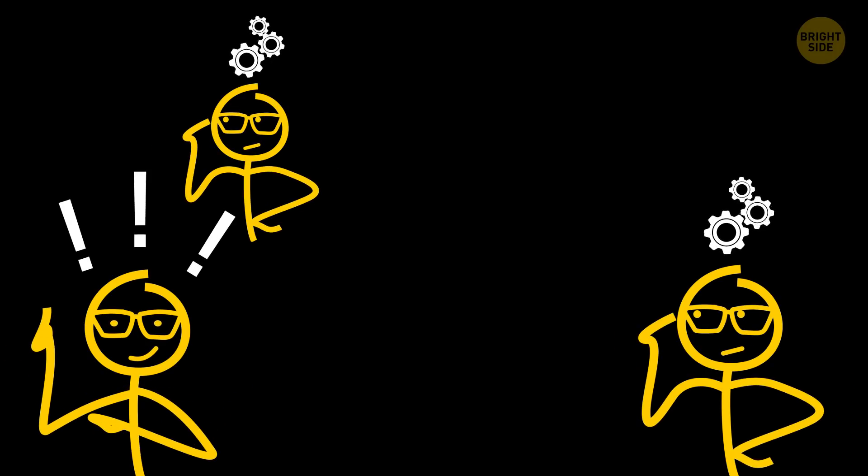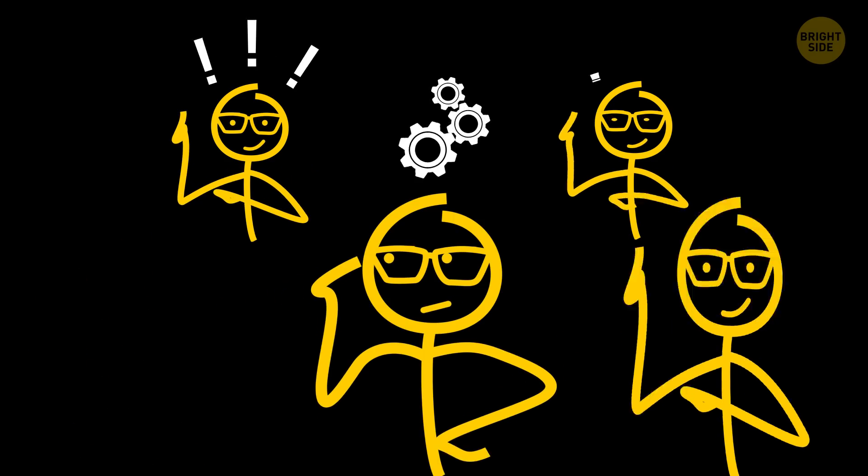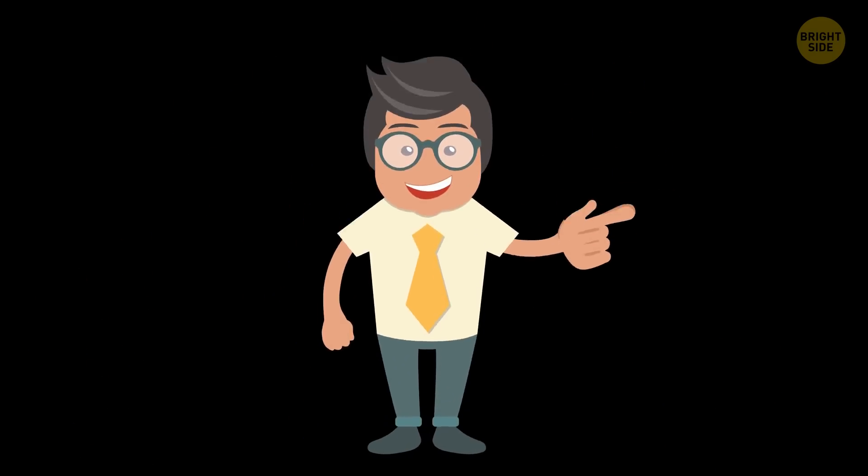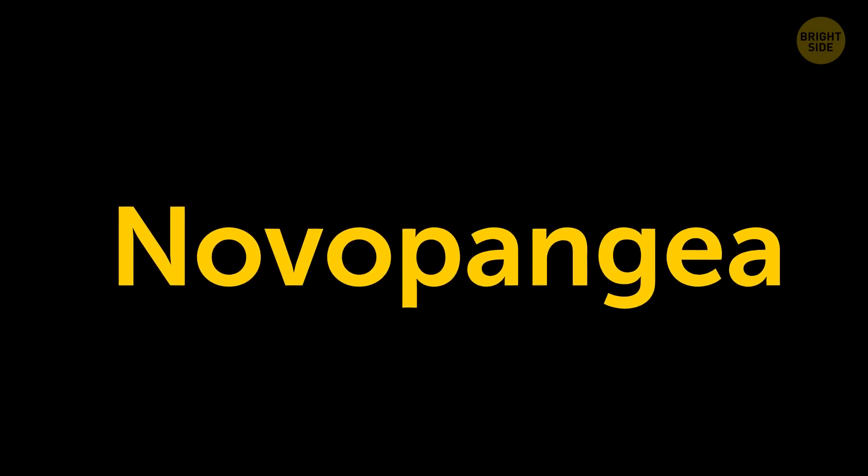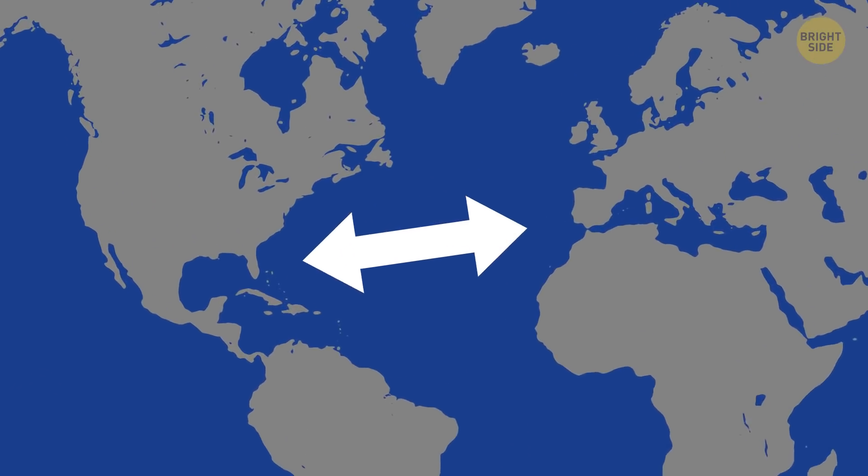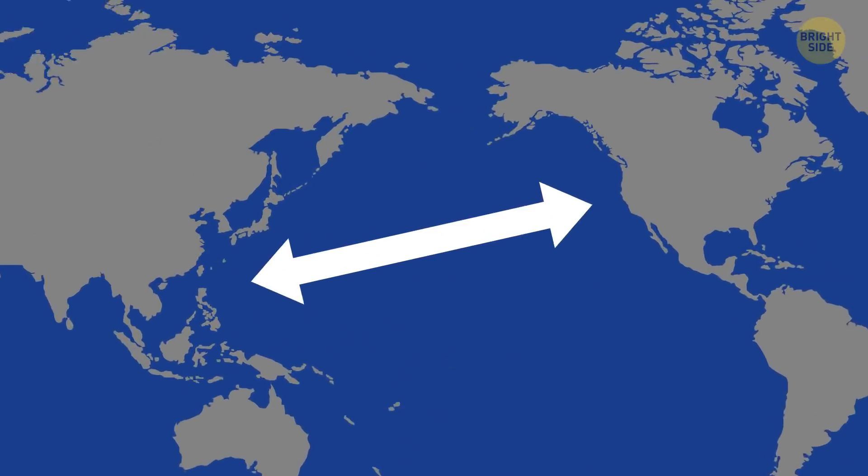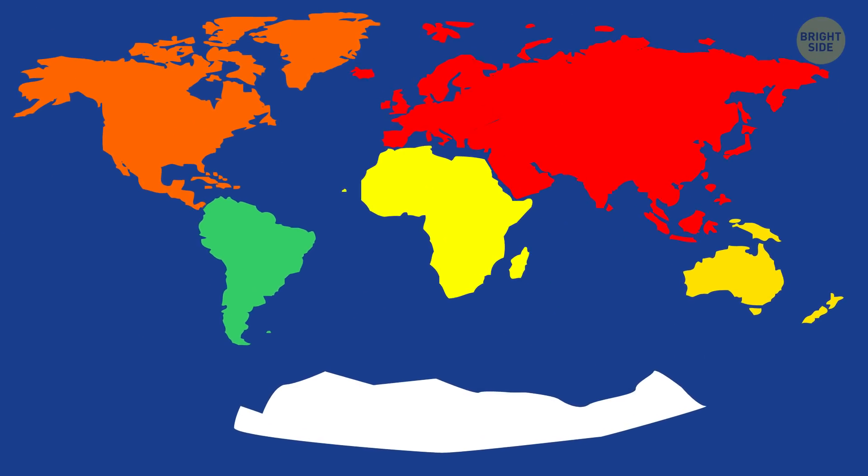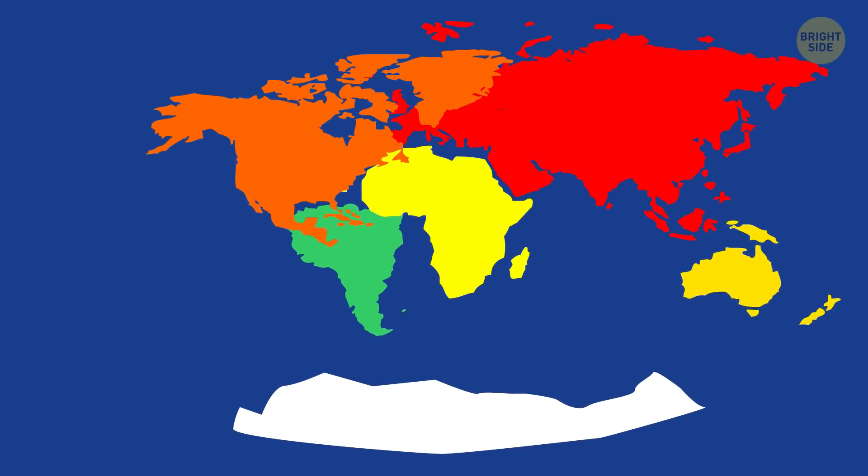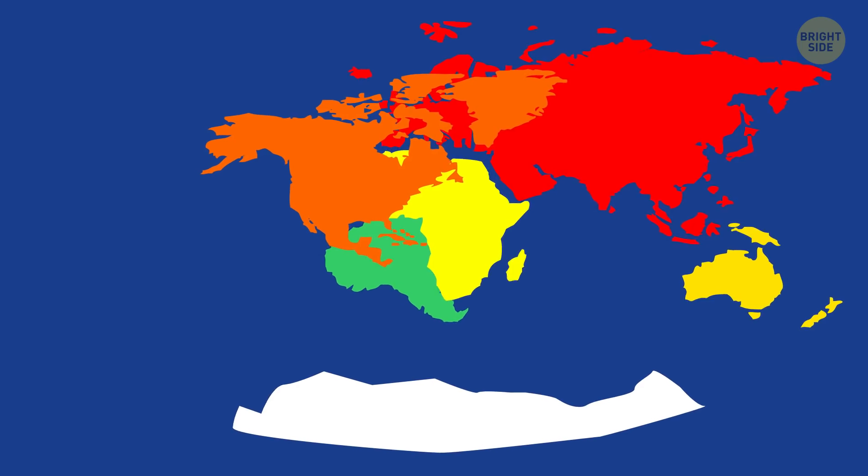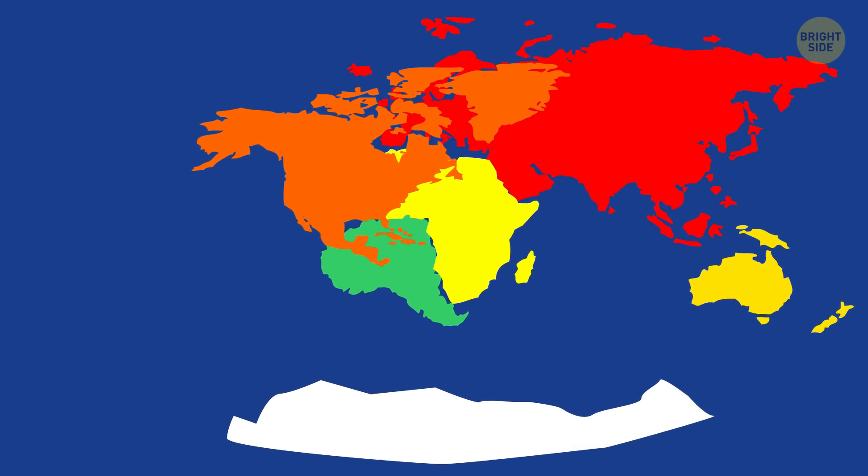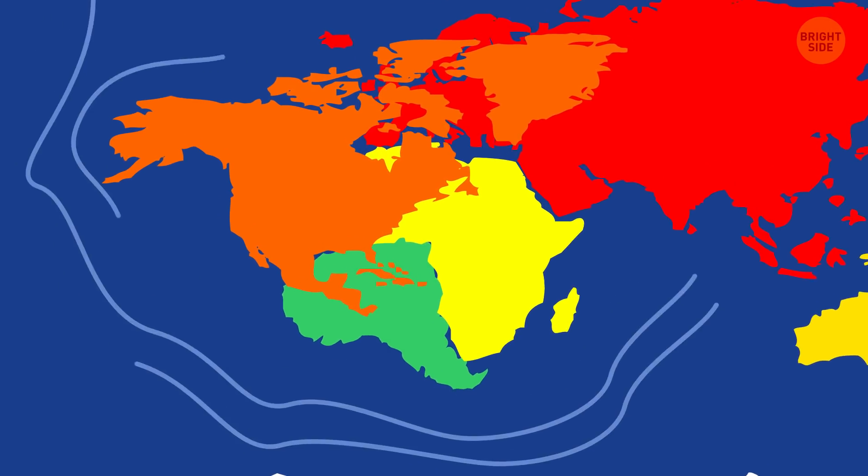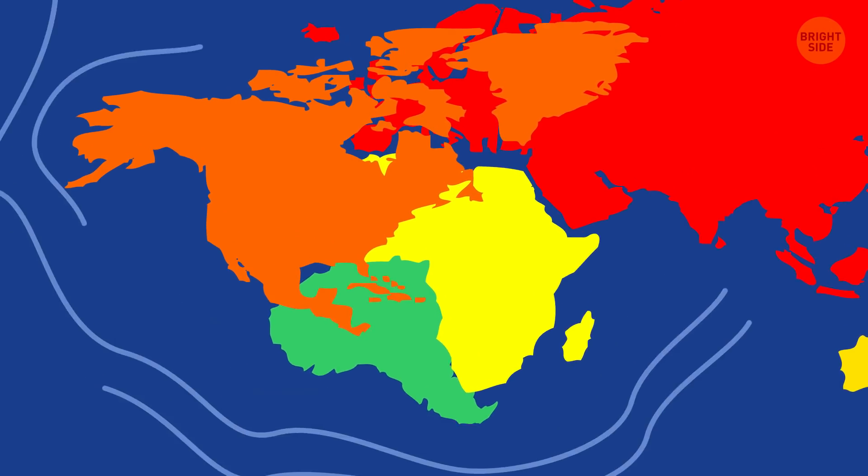On top of that, there are several more theories about how exactly our planet will come to this supercontinent thing. The most likely one for now is called Novo Pangea. Today, scientists believe that the Atlantic Ocean is opening while the Pacific, on the contrary, is closing. If this tendency persists, then both American continents will go join the club with Africa and Eurasia. As a result, a huge landmass will form, surrounded from all sides by a new, even more humongous ocean.